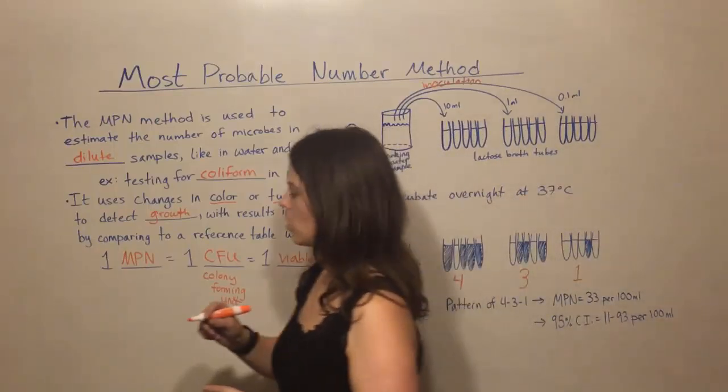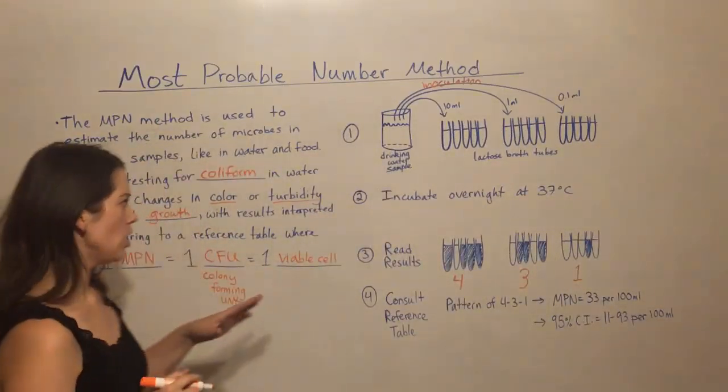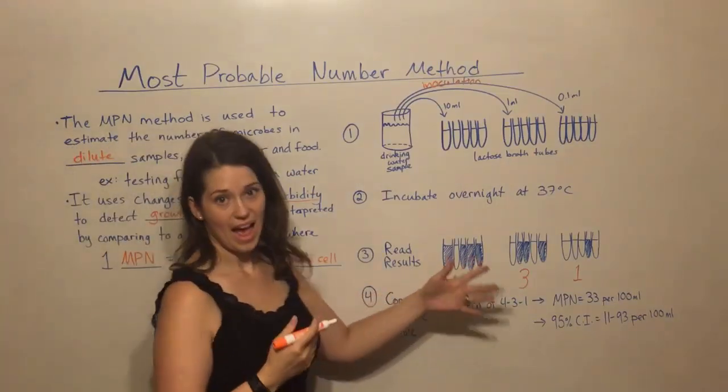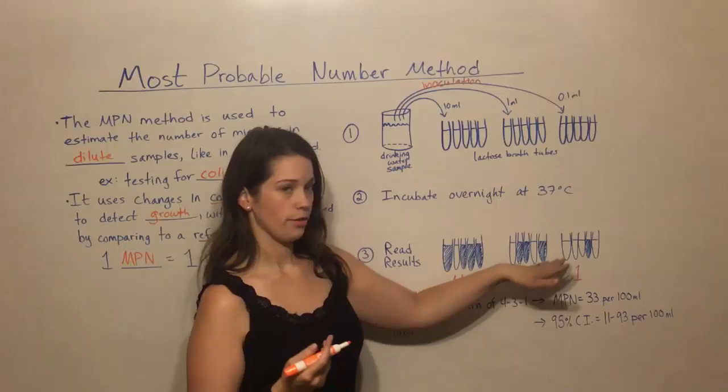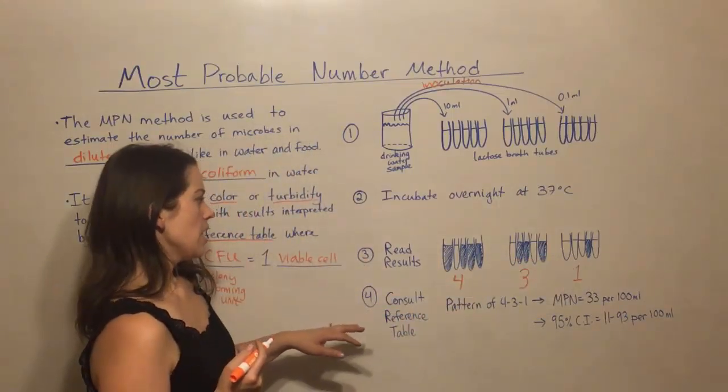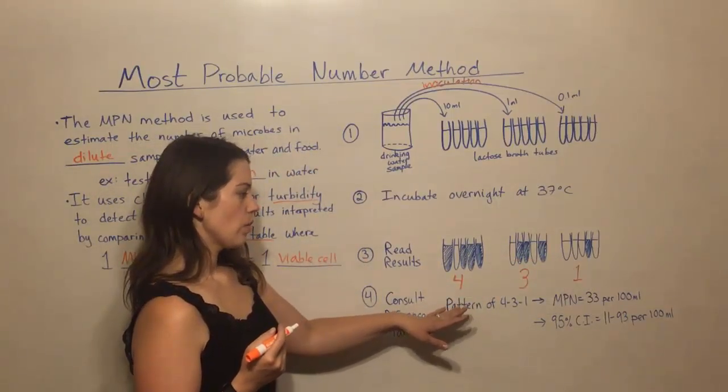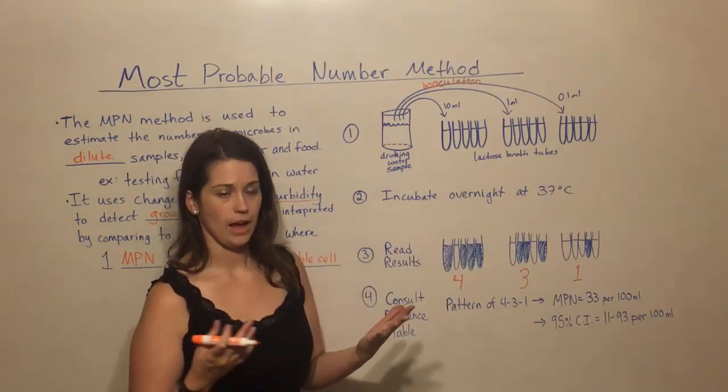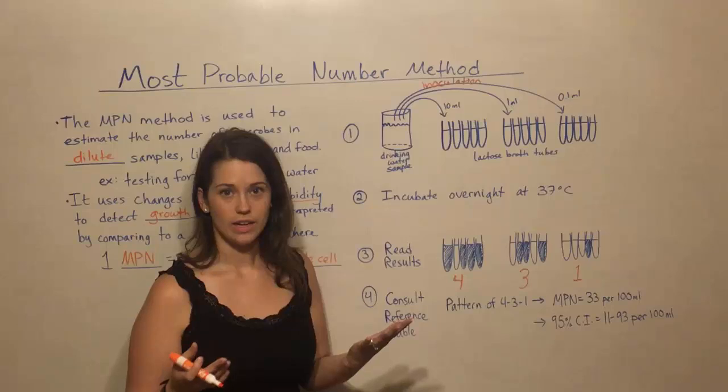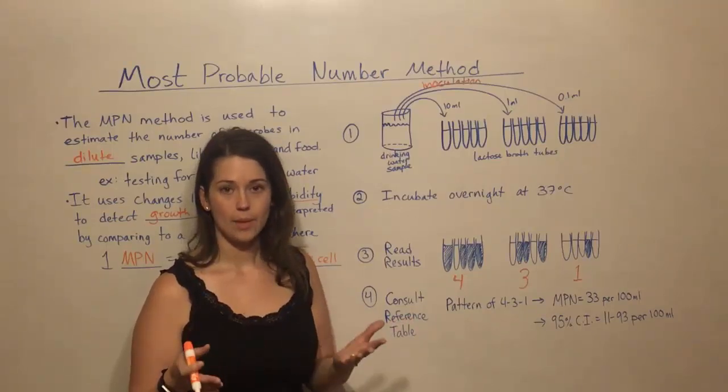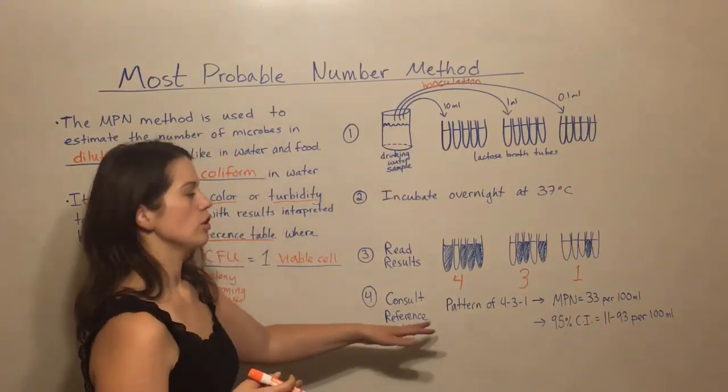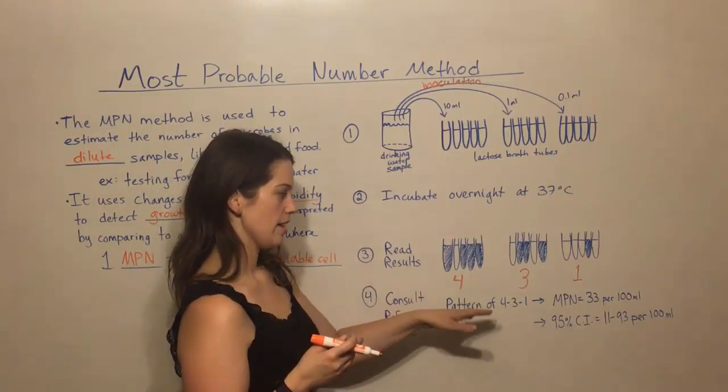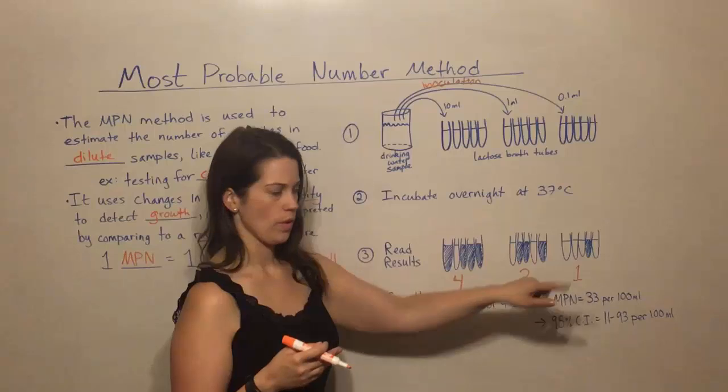And so that is our results that we then want to come and compare in the reference table. So our pattern, if you will, was 4-3-1. And so we look at our reference table. If you're a student, this is often in the back of a textbook or in the back of a lab manual. So you look for the pattern of 4-3-1.